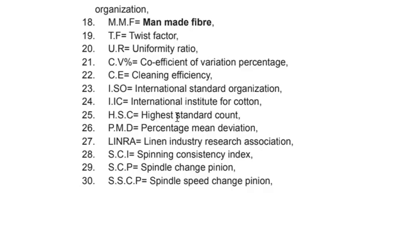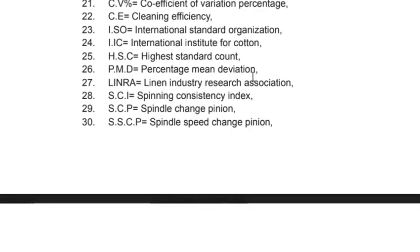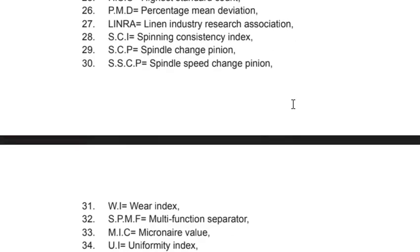Continuing spinning abbreviations: HSC – Highest Standard Cotton; PMD – Percentage Min Variation; LINRA – Line Industry Recharge Association; SCI – Spinning Consistency Index; SPC – Spindle Chain Spinion; SSPC – Spindle Speed Chain Spinion; WI – Wire Index; SPMF – Multifunction Separator; MIC – Micronaire Value; UI – Uniform Index; RRW – Required Ratchet Wheel.